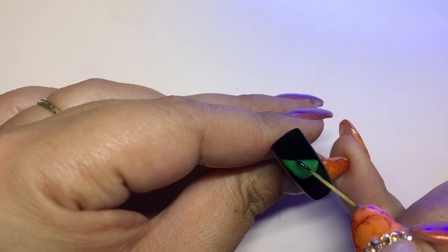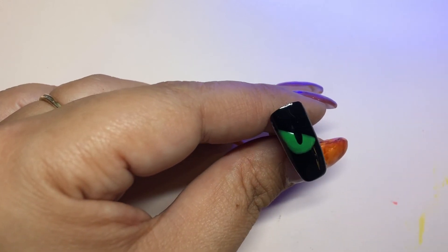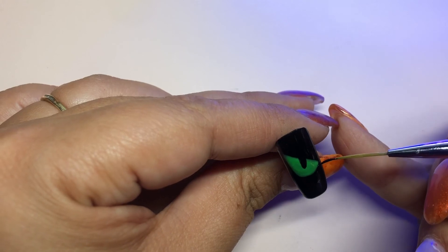Come back with black and do the pupil, then go around the green and just sharpen everything to really bring that eye together.